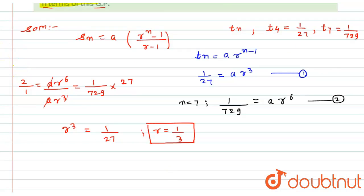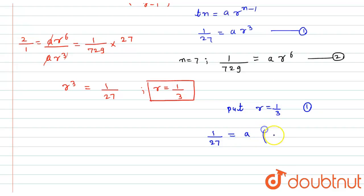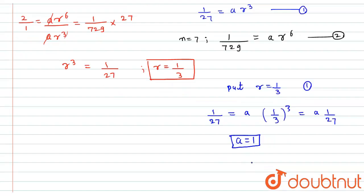Now I have the value of r = 1/3. Next I need the value of a. Substituting r = 1/3 into equation number 1: 1/27 = a·(1/3)^3 = a·(1/27). The 27's cancel, so the value of a = 1.